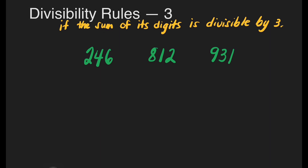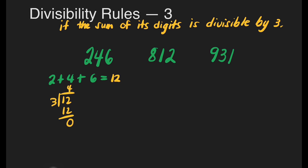Let's check 246. Let's add all its digits. That's going to be 2 plus 4 plus 6, which is 12. Is 12 divisible by 3? We divide 12 by 3 — the answer is 4 with no remainder. So 246 is divisible by 3.